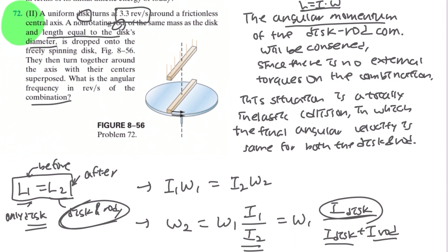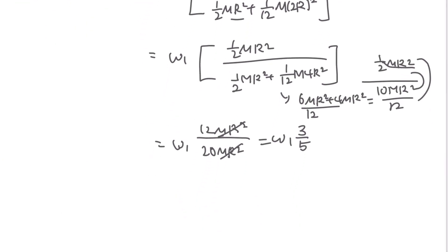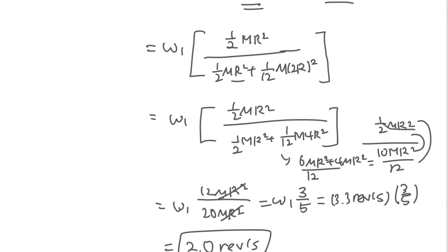And we have the value of omega1 as 3.3 revolutions per second, so let's substitute that value. It will be 3.3 revolutions per second times 3/5, which will be equal to 2.0 revolutions per second. And so this will be the end of the video, and thanks for watching.